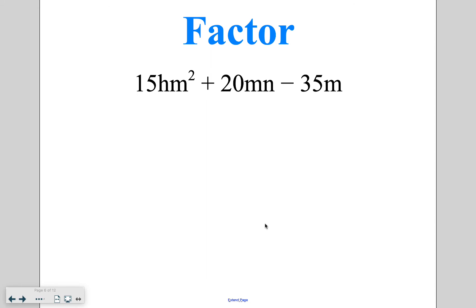So now we are going to use that GCF idea to actually factor the polynomial. We are looking for what we can take out of each of these pieces. I've got 1 and 15, 3 and 5, an h, and 2 m's. Then I have 1 and 20, 2 and 10, 4 and 5, an m, and an n. And then I've got 1 and 35, 5 and 7, and a singular m.